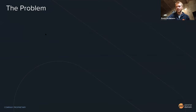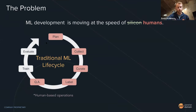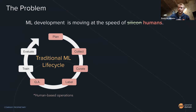What problem can synthetic data solve? Machine learning development is moving at the speed of humans, not silicon — because we have a very human-centric process for collecting and labeling data. In autonomous driving and most perception use cases, we have to plan what data we need, put real vehicles out in the world to collect it, curate that data, and then ship it out to labeling companies where humans draw labels on those images.